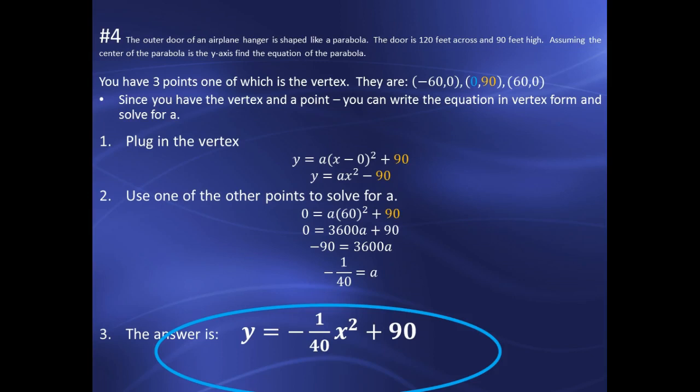And so, I'm going to pick one and use it. So, I decided to pick 60 comma zero. X equals 60, Y equals zero. And so, I plug 60 in for X and I'm going to square it. And I plug zero in for Y. When I square 60, I get 3,600. I'm going to subtract 90 from both sides, divide by 3,600. And that gives me an A value of negative 1 over 40.